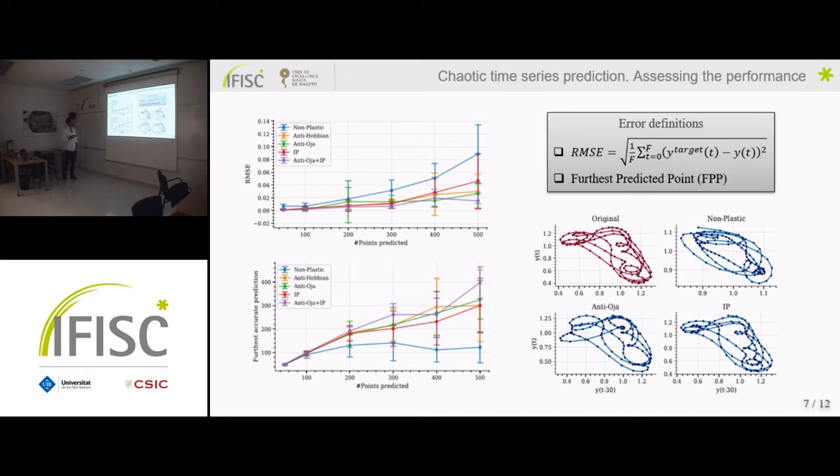Whereas the combination of anti-Oja plus IP always gives more or less a smaller error. And in between you have the other types of plasticity. Same with, you can predict more points without making a huge error if you have the combination, whereas if you are in the non-plastic case, you can barely pass from 100.